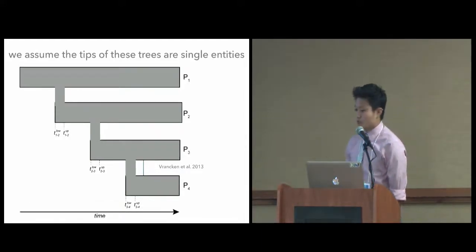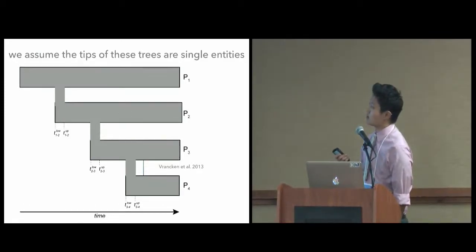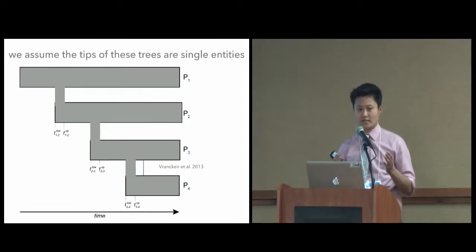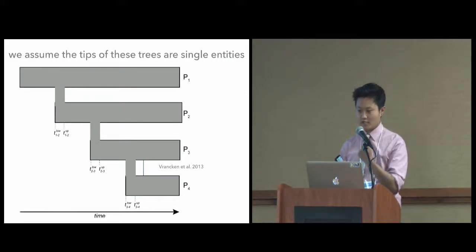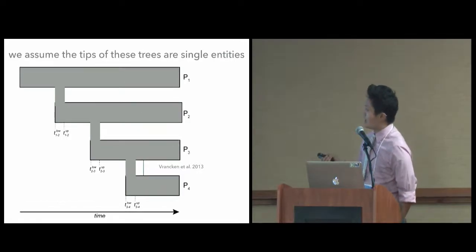So my work is on this assumption within this phylogenetic workflow for transmission inference. We assume that the tips of these trees are single entities. Here on this tree, we have person one, person two, person three, person four. And so the current approach in terms of assembling the genome from the data is you sequence these individuals' viral genomes. There's a whole population of reads. And then you take the consensus genome, which is essentially you take the base pair that is the most frequent at each site. So if the site is like 60% A and like 40% C, you'll take A at that site. And then you use it as like a single genome and build the tree.